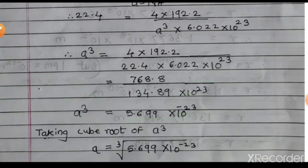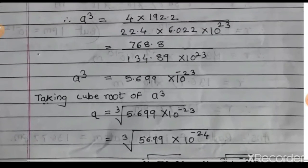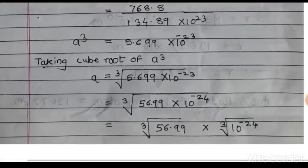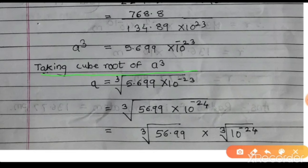To calculate the cube root of 56.99, we use log tables: (1/3) × log(56.99) = (1/3) × 1.7558 = 0.5862. Anti-log of 0.5862 = 3.857. Therefore a = 3.857 × 10⁻⁸ cm.